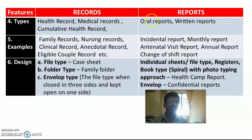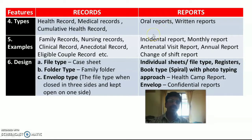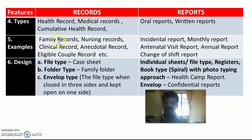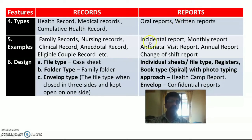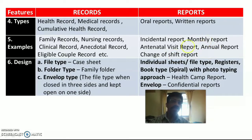The next feature is regarding the types of records and reports. Important types of records include health records, medical records, cumulative health records, and school health records. In case of reports, there are two main classifications: oral reports and written reports. In emergencies, only oral reports are given, which are later converted into written reports within 24 hours. Examples of records include family records, nursing records, clinical records, anecdotal records, and eligible couple records. Examples of reports include incident reports, monthly reports, antenatal visit reports, field visit reports, annual reports, and change-of-shift reports such as day and night reports.